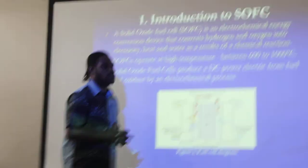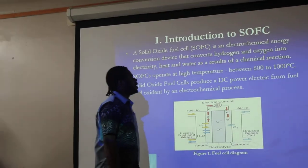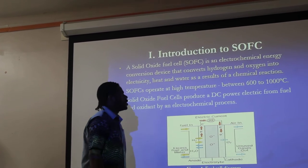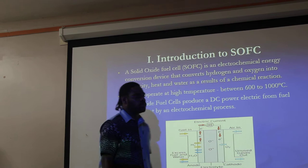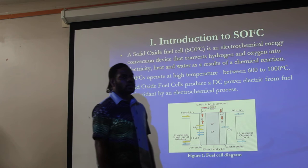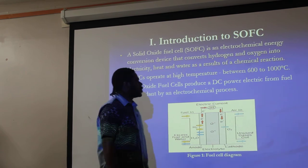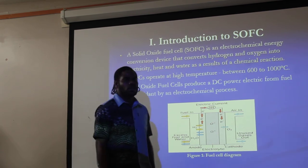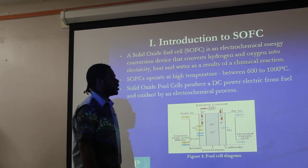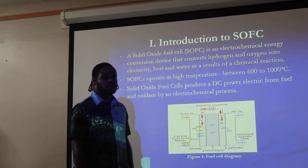A brief introduction about Solid Oxide Fuel Cell. Solid Oxide Fuel Cell is an electrochemical energy conversion device that converts hydrogen and oxygen into electricity, heat, and water as a result of a chemical reaction. It is operated at high temperature, ranging from 600 to 1000 degrees Celsius.